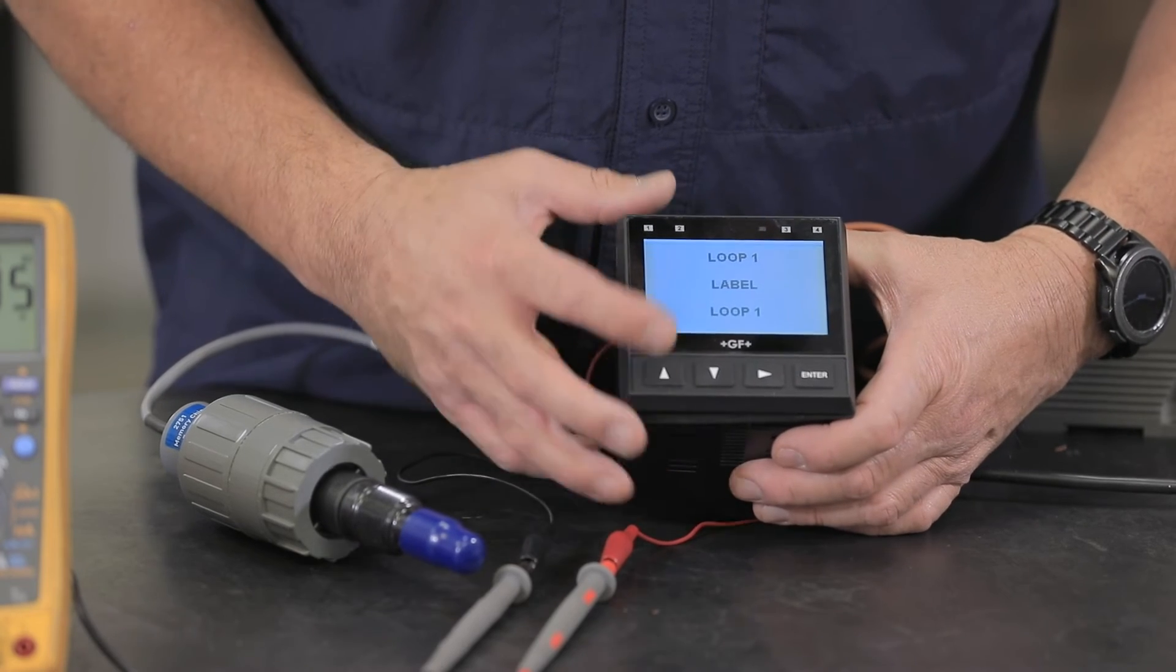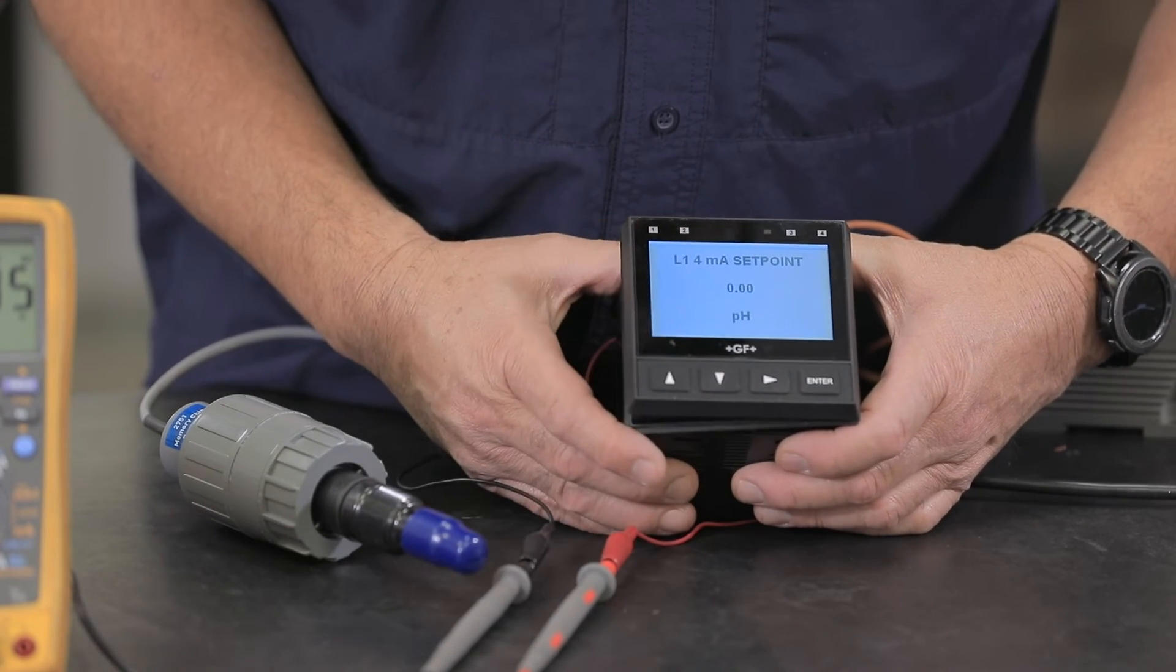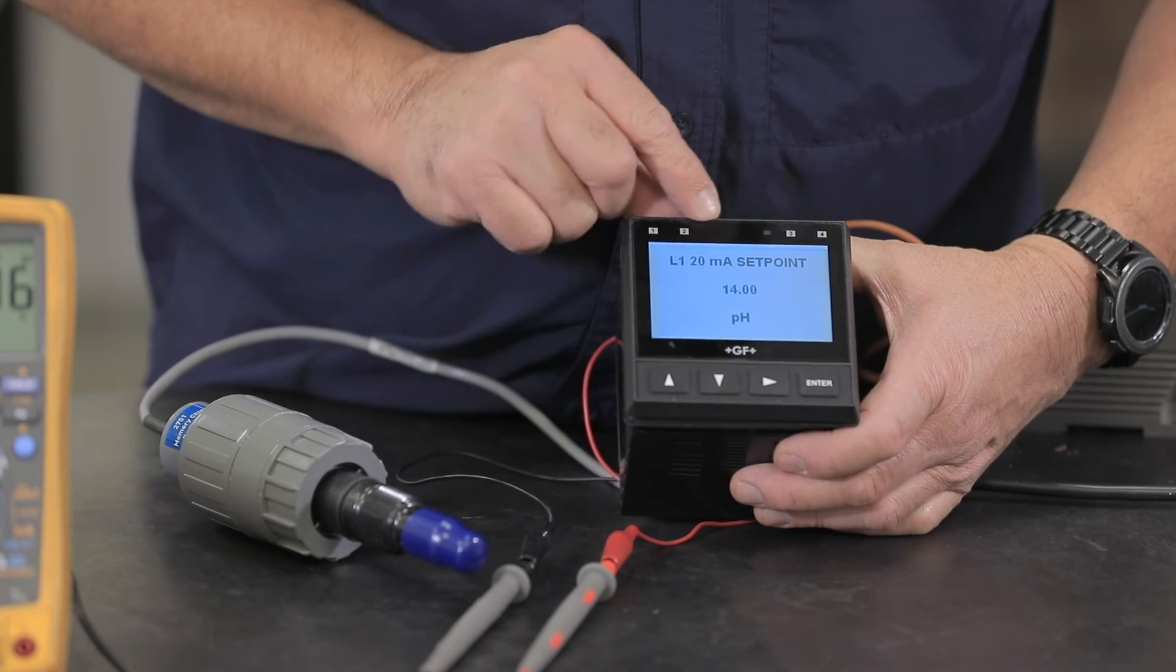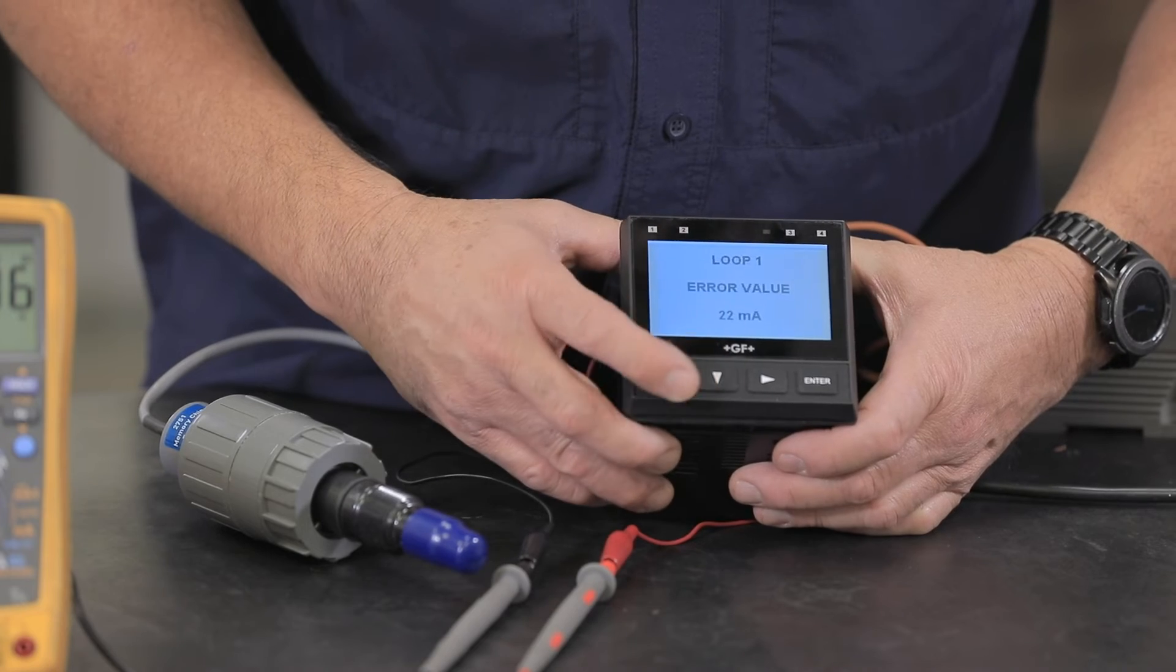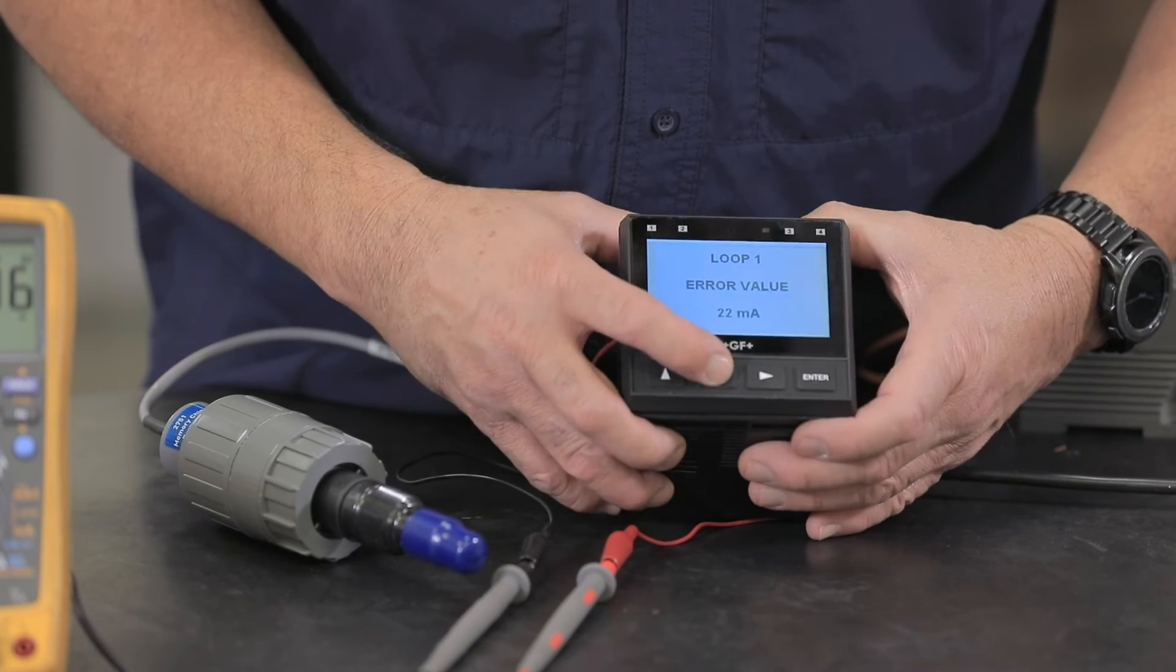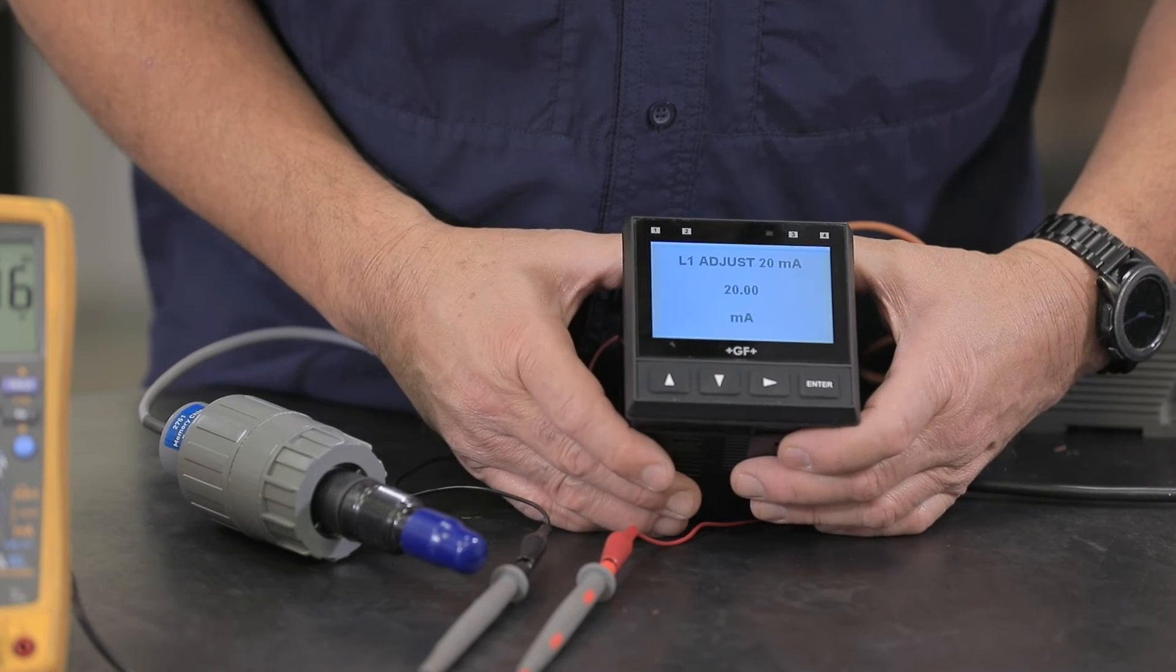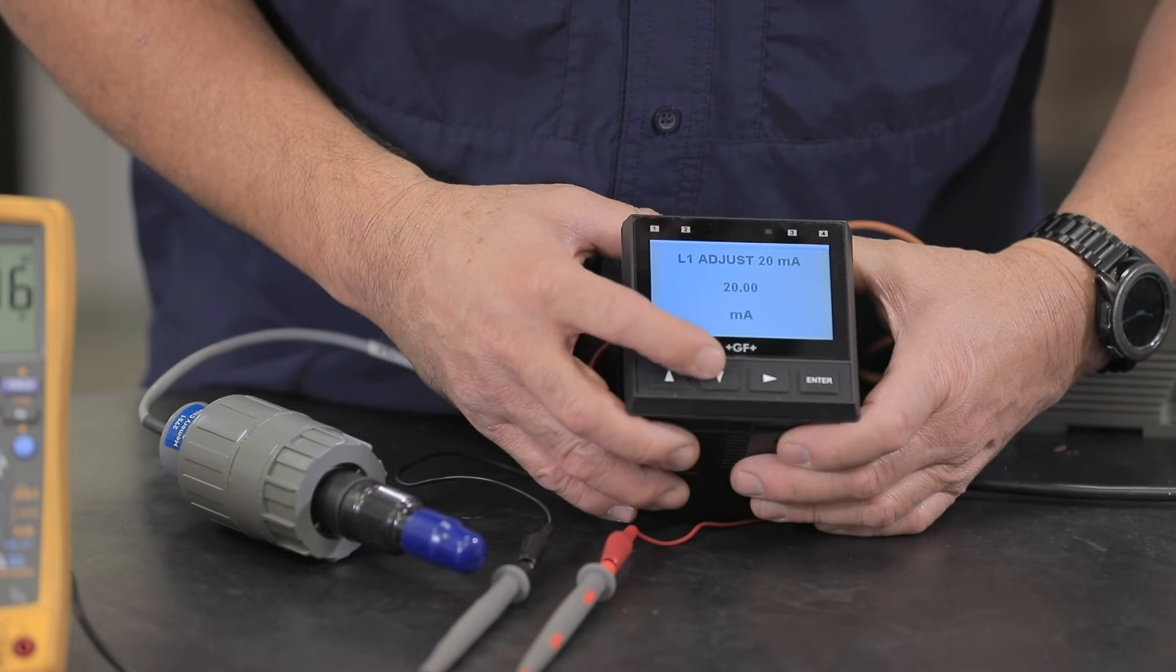Channel two primary label loop, so we can label it if we needed to. 4 milliamp set point is 0 pH and 20 milliamp set point is 14 pH. Very good. Error is going to be 22. Loop adjust is 4 and loop adjust 20 is 20.